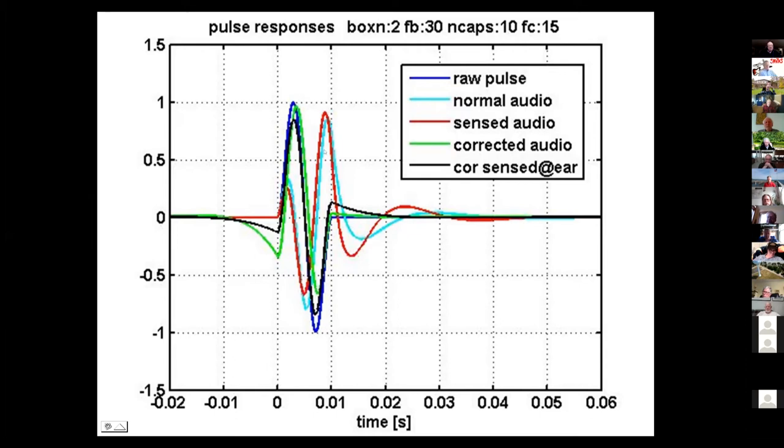The corrected audio has this precursor pulse here and not much on the output. But when we look at what we actually sense with the ear, we get the black curve, which is not bad. It has a very clean shape, but it does have a precursor and a postcursor.